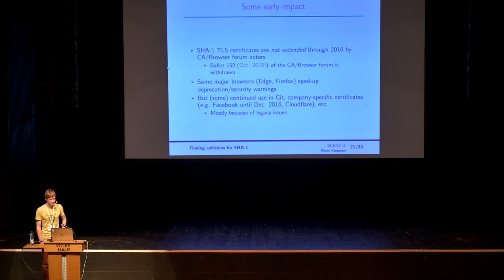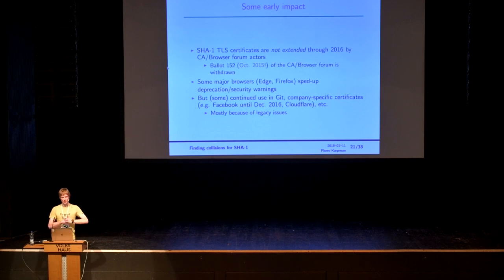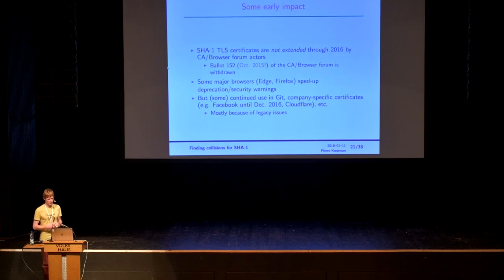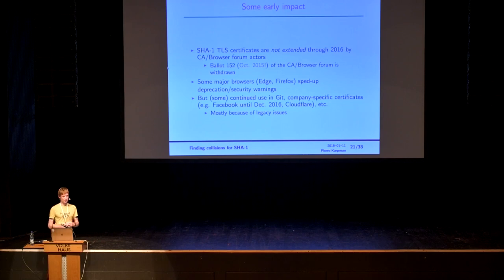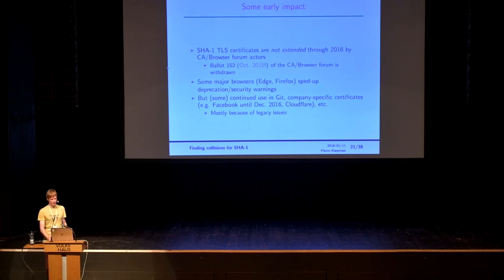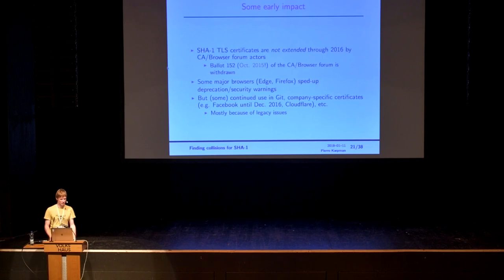This started having industrial impact. At the time we released the attack, there was a ballot for the CA/Browser Forum where some parties wanted to push issuing SHA-1 certificates through 2016. We announced the free-start collision, they realized it wasn't such a great idea, and the ballot was withdrawn. Major browsers — Edge, Firefox — had already planned to deprecate SHA-1, but they sped things up. In some other cases, like Git, SHA-1 was still in use with no issue.